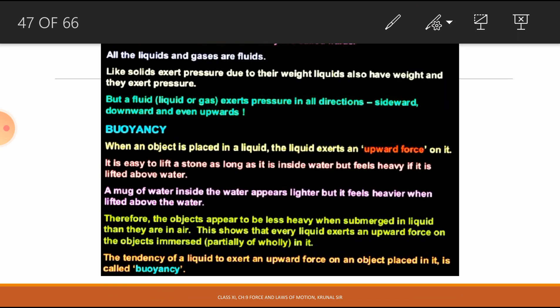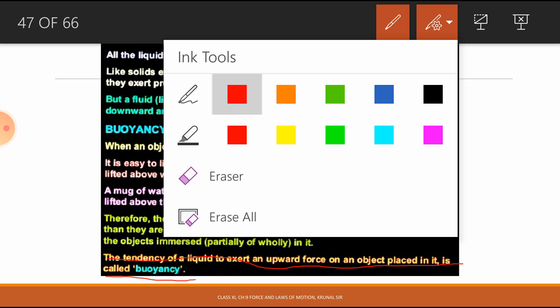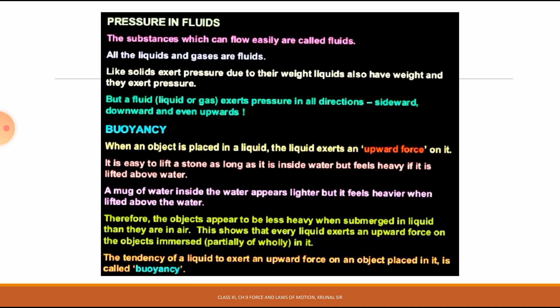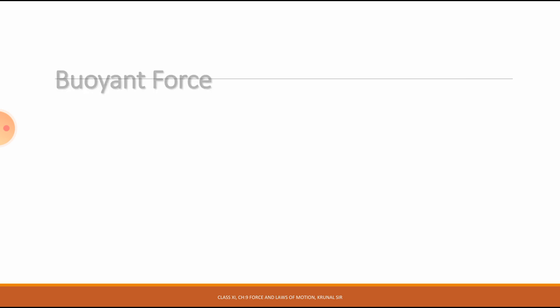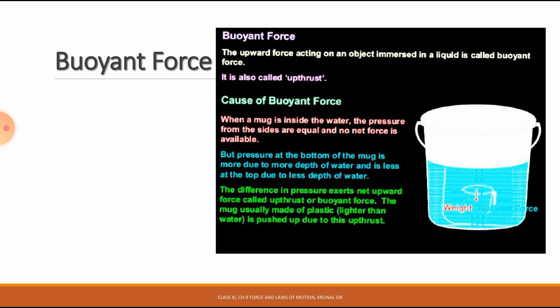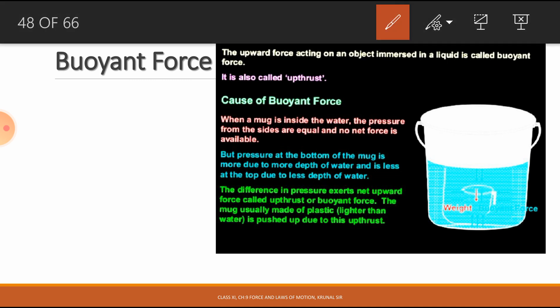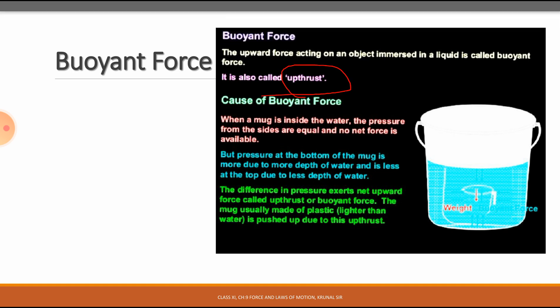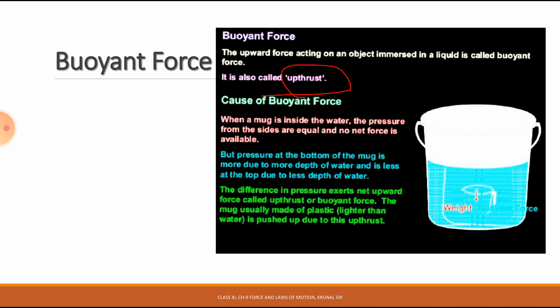The buoyant force is the upward force acting on an object immersed in a liquid. It is also called upthrust. So the upward thrust acting on an object in a liquid is called the buoyant force. Now, what is the cause of this buoyant force?